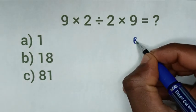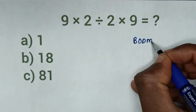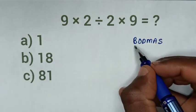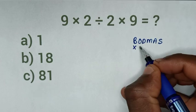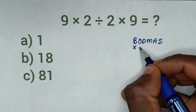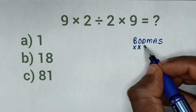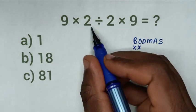Whereas from BODMAS, B is bracket - we don't have bracket. O is order or exponent - we don't have order or exponents. D is division. We have division here.